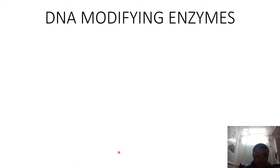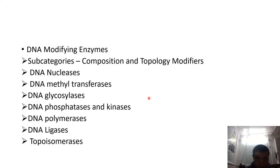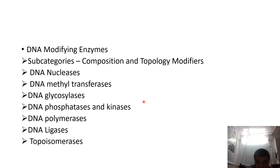If we talk about the composition modifiers, these are the chemically modifying enzymes. The composition modifiers are those enzymes that change the chemical composition and chemical constitution of the DNA, and as a result they require a net gain or loss of covalent bonds.